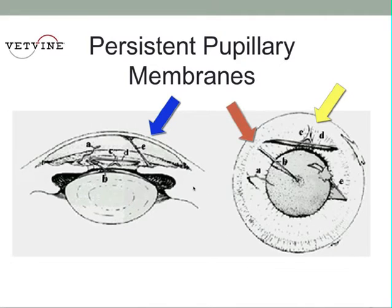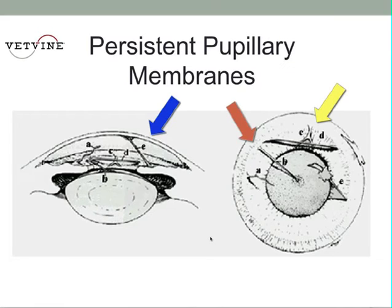The third type of pupillary membrane is one that arises from the collarette, but then traverses across the anterior chamber to insert on the corneal endothelium, leading to a focal area of adhesion between the iris and the cornea.